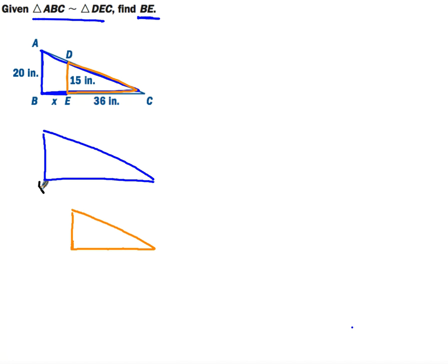We're going to write in B, A, C, and E, D, C as well. We can put in 20 here, and this whole distance here is going to be X plus 36.